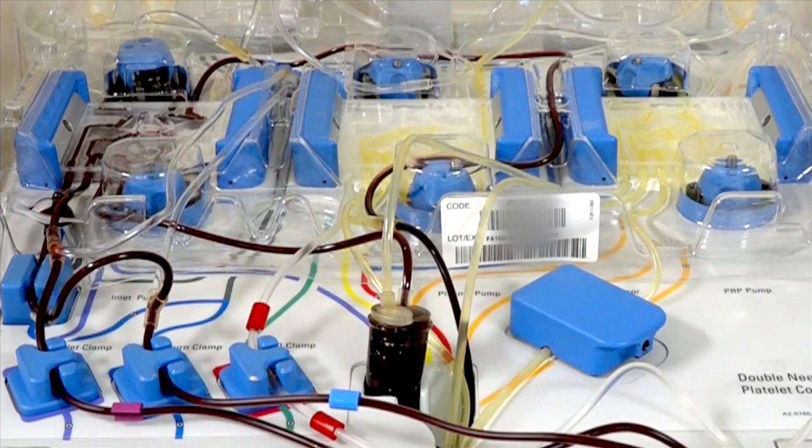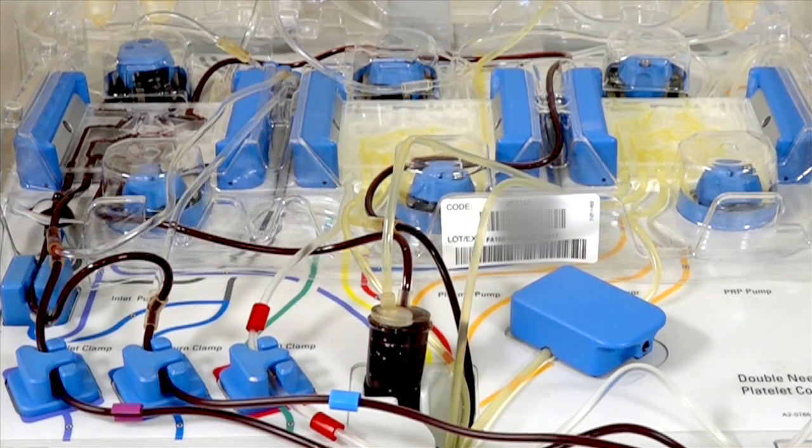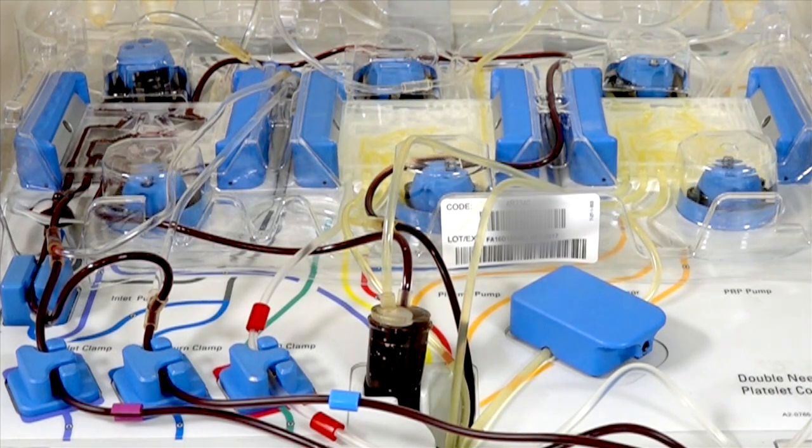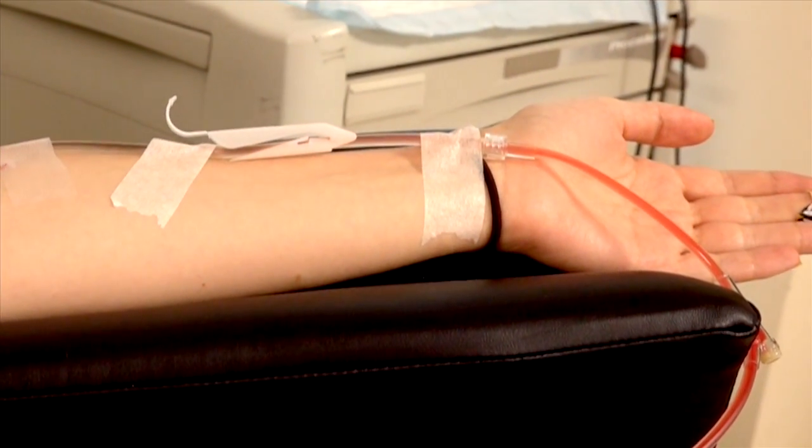First, Max took medications to coax some blood-forming stem cells with a defective gene out of his bone marrow and into the blood. Then, he underwent apheresis, in which blood is withdrawn and passed through a machine that separates blood components. All but the stem cell-containing component were returned.